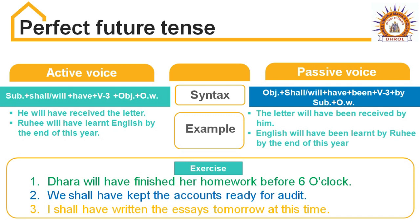Now come to the example. First example: 'He will have received the letter.' To make it passive, find out the object — He will have received what? The object is 'letter'. So 'letter' becomes the subject. Then: will have been, past participle of 'receive' is 'received', then 'by him' — because 'he' becomes 'him'. Repeating the example: The letter will have been received by him.